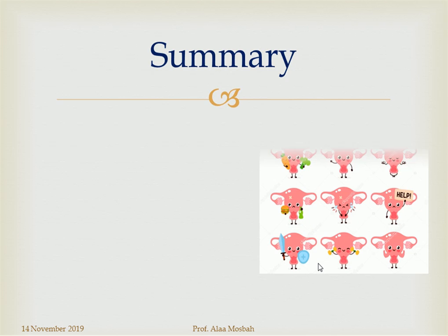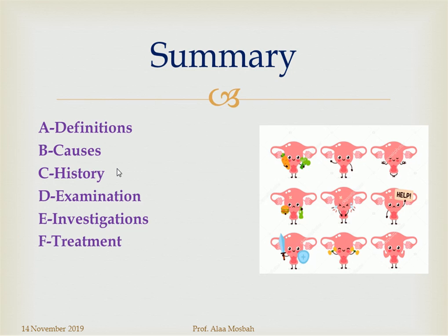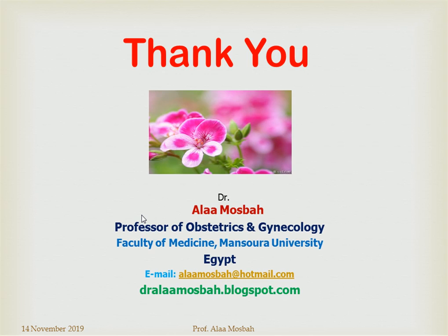In conclusion, we have discussed different definitions — old and recent — and we should know both, especially the FIGO 2011 definition. We journeyed through the causes of abnormal uterine bleeding, how to diagnose via history, examination, and investigations, and how to treat such cases. Finally, we discussed dysfunctional uterine bleeding. Thank you. I am Professor Alaa Musbah, Professor of Obstetrics and Gynecology, Faculty of Medicine, Mansoura University. Visit my blogspot dralaqmusbah.blogspot.com. I hope to see you soon in another lecture.